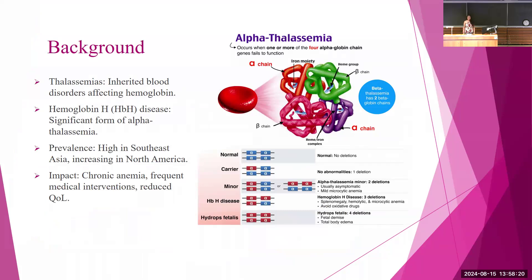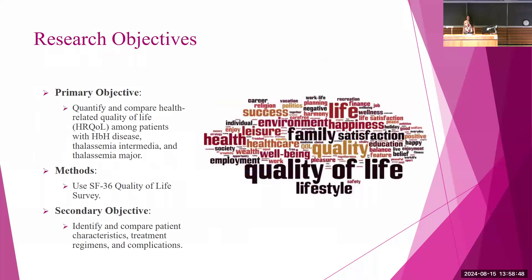Thalassemias are inherited blood disorders caused by genetic changes in hemoglobin affecting oxygen delivery throughout the body. HBH disease, or hemoglobin H disease, is a significant form of alpha-thalassemia prevalent in Southeast Asia and increasingly in North America. Patients often experience chronic anemia requiring frequent medical interventions that impact quality of life. Our primary objective is to quantify and compare health-related quality of life outcomes among patients with HBH disease, thalassemia intermediate, and thalassemia major, using established instruments like the SF-36 to assess physical, emotional, and social aspects.